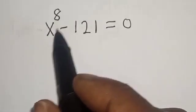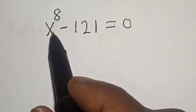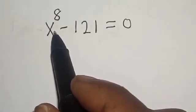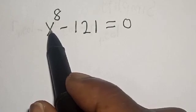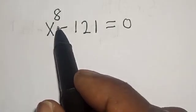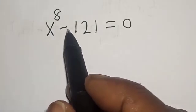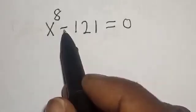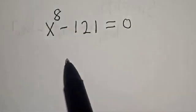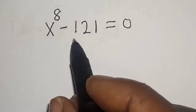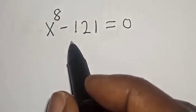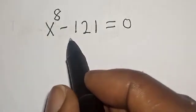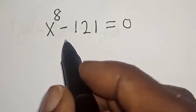Hello, welcome to Matgist. In this class we want to find the value of x from this exponential equation: x raised to power 8 minus 121 is equal to zero. Please don't forget to like, share, comment and subscribe.